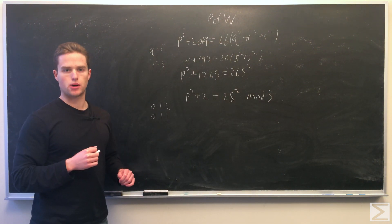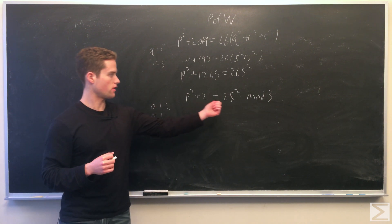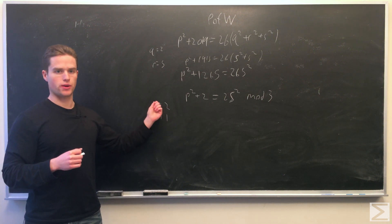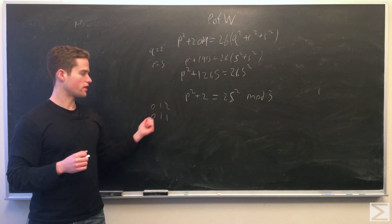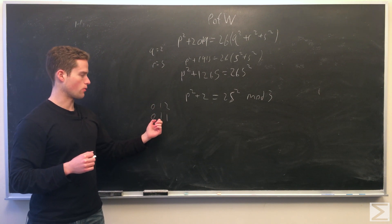For our last modulo equation, we're going to take modulo 3. Modulo 3, we can have values of 0, 1, or 2. Squaring these, we see we can have values of 0 or 1 for the squares.